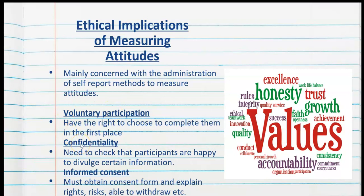Confidentiality is also very important — we need to check that participants are happy to divulge certain information and for their name to be published, or otherwise give them an ID number or alias. Informed consent is equally important: we must obtain a consent form, explain the rights and risks, and confirm they are able to withdraw. A common way this is done is by sending the interview or survey questions to participants first, so they know what they are answering regarding the attitude in question.